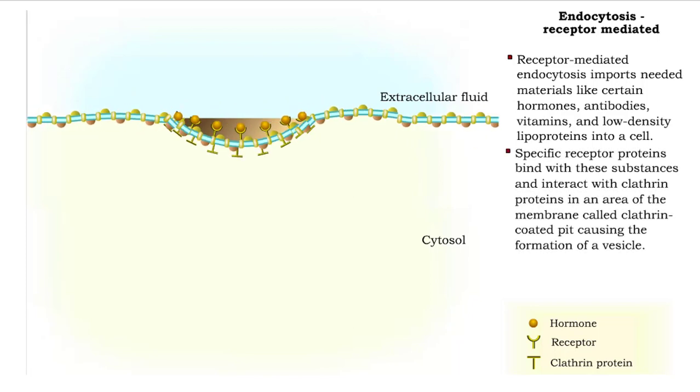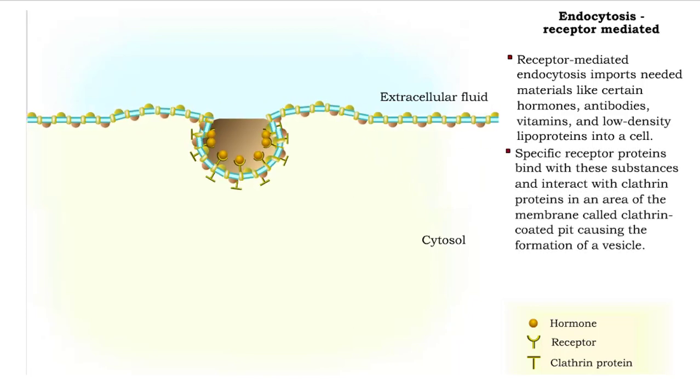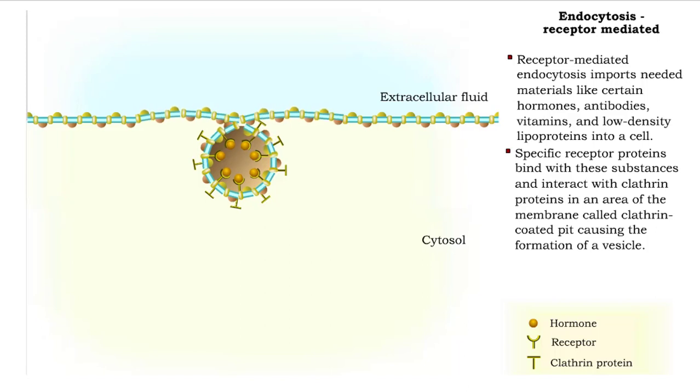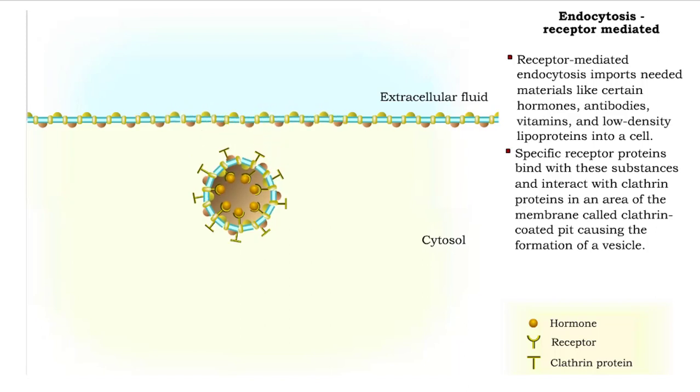When the coated pit and receptor interact, the membrane folds inward to form a vesicle surrounding the substance and receptors.